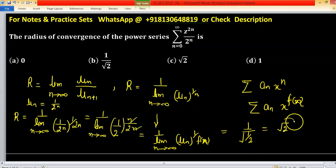So what we have? Under root 2. So, under root 2 means option c is your radius of convergence.